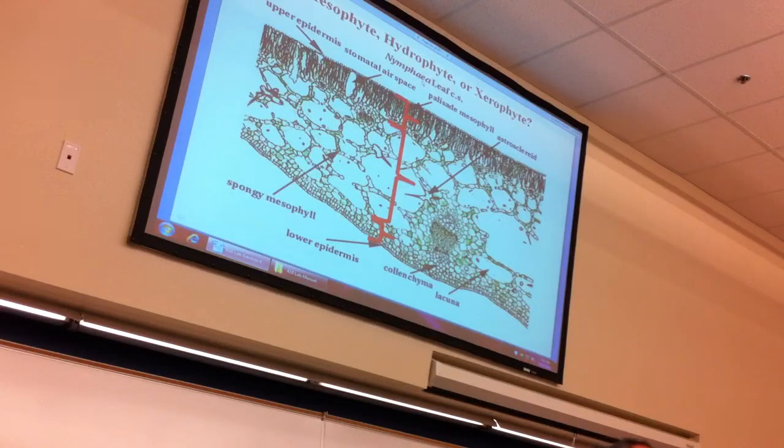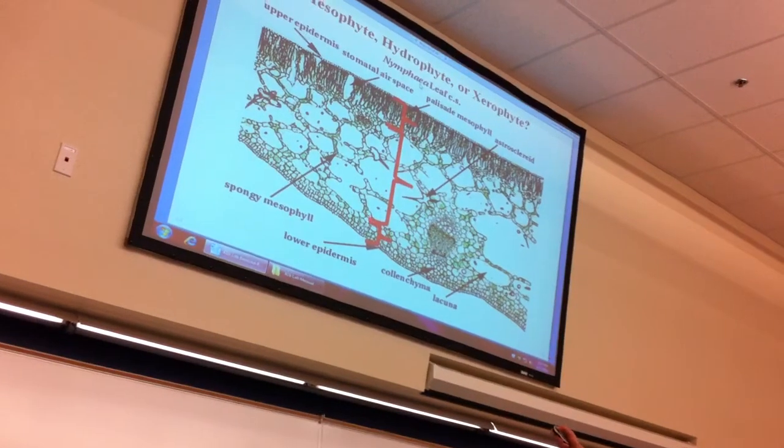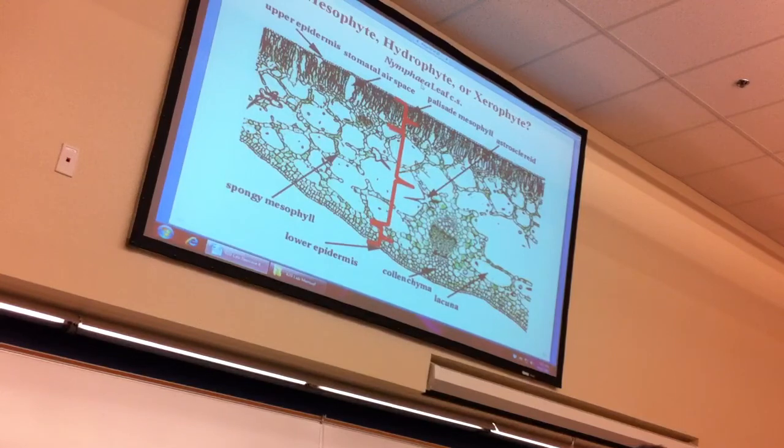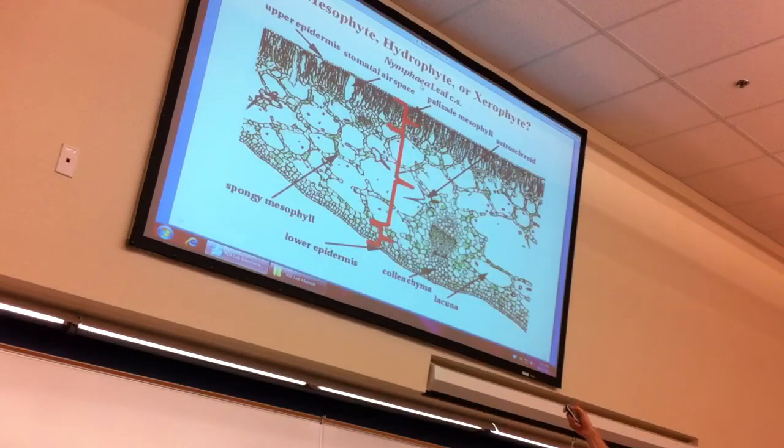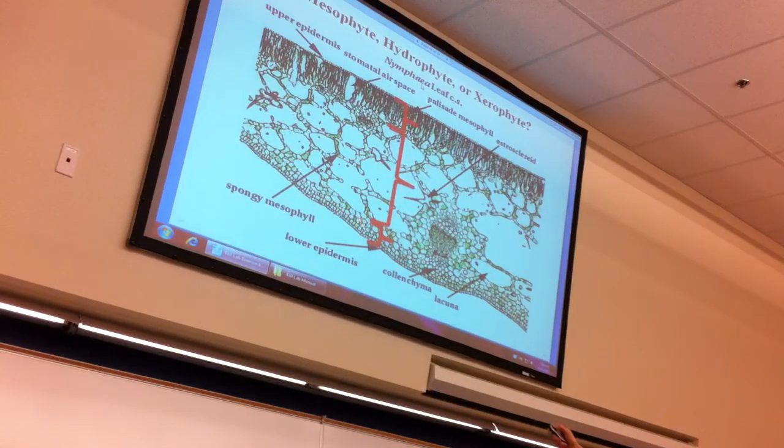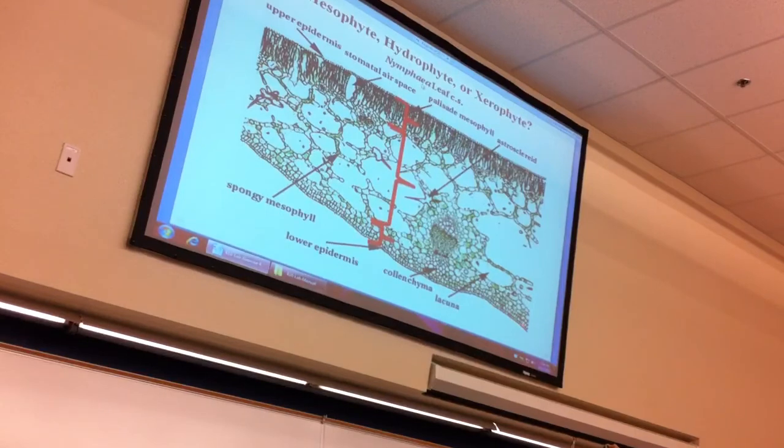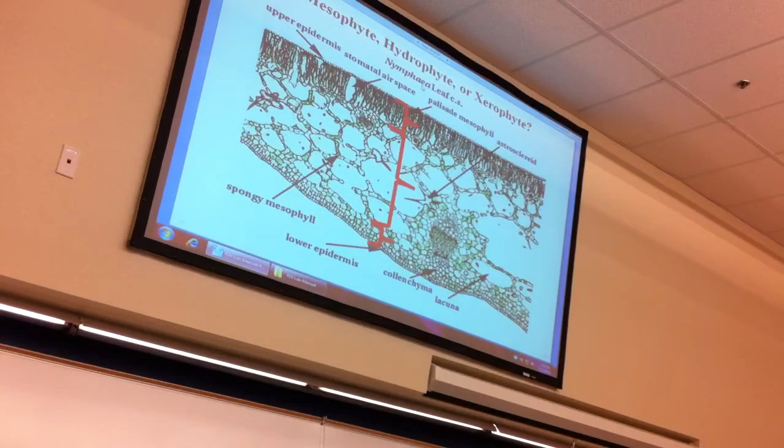Now we're going to compare and contrast. Let's compare it with this one. Look at some of the differences. What part of the leaf is this? It's spongy mesophyll. So this has a huge spongy mesophyll and here's the palisade. I've got one, two, three, four, five layers of lower epidermis.